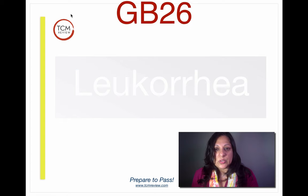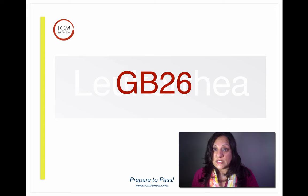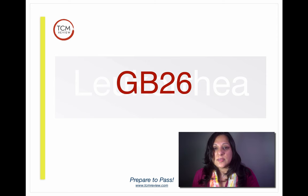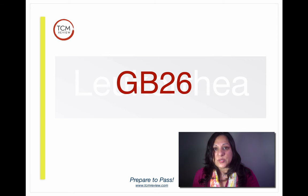Now we're moving into leukorrhea, which is treated by GB26. GB26 is a point on the Dai channel — the only channel in the body that runs horizontally. When you have leukorrhea, you can think of the Dai channel being too loose. So you need to tighten the belt — tighten that Dai channel running around the waist — and that will prevent leakage of fluids. GB26 helps with that. This applies to deficiency-type leukorrhea only; excess-type tends to be damp-heat and has a whole different approach.